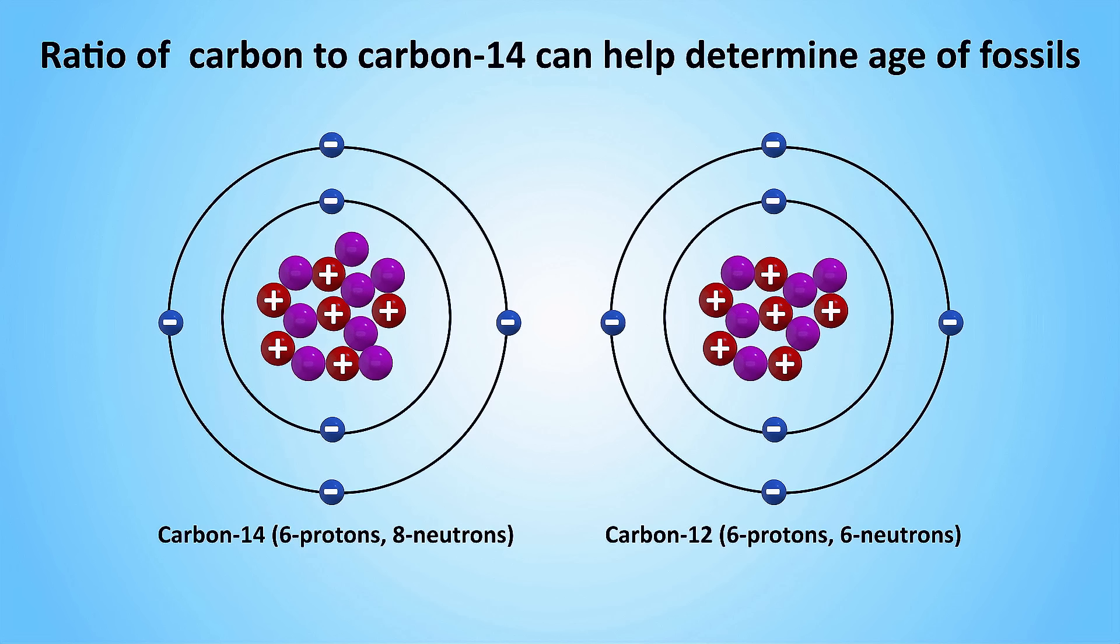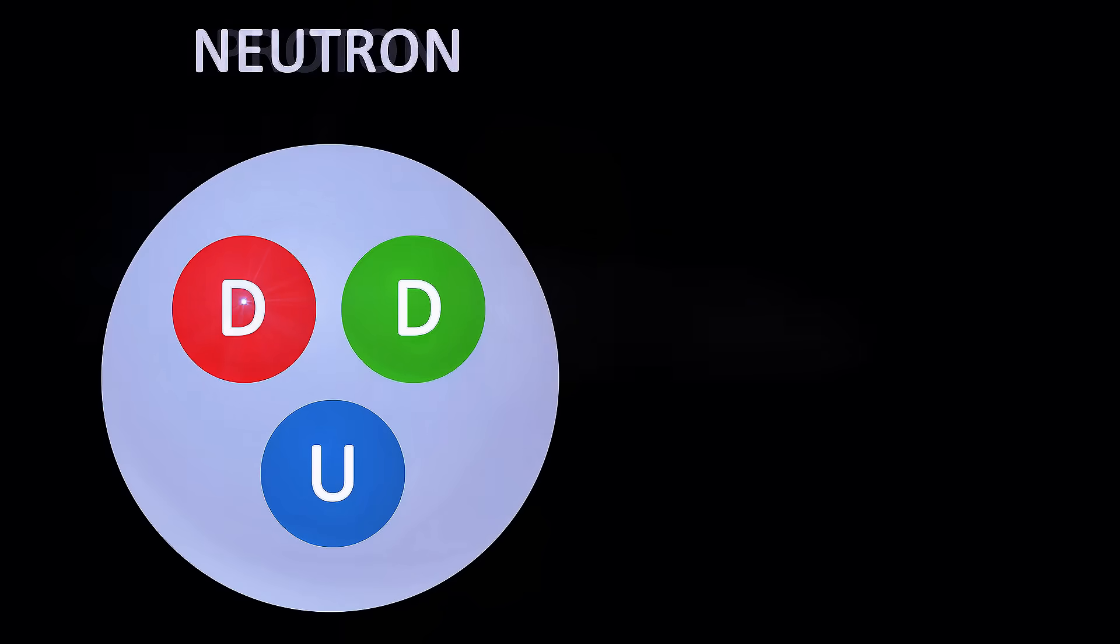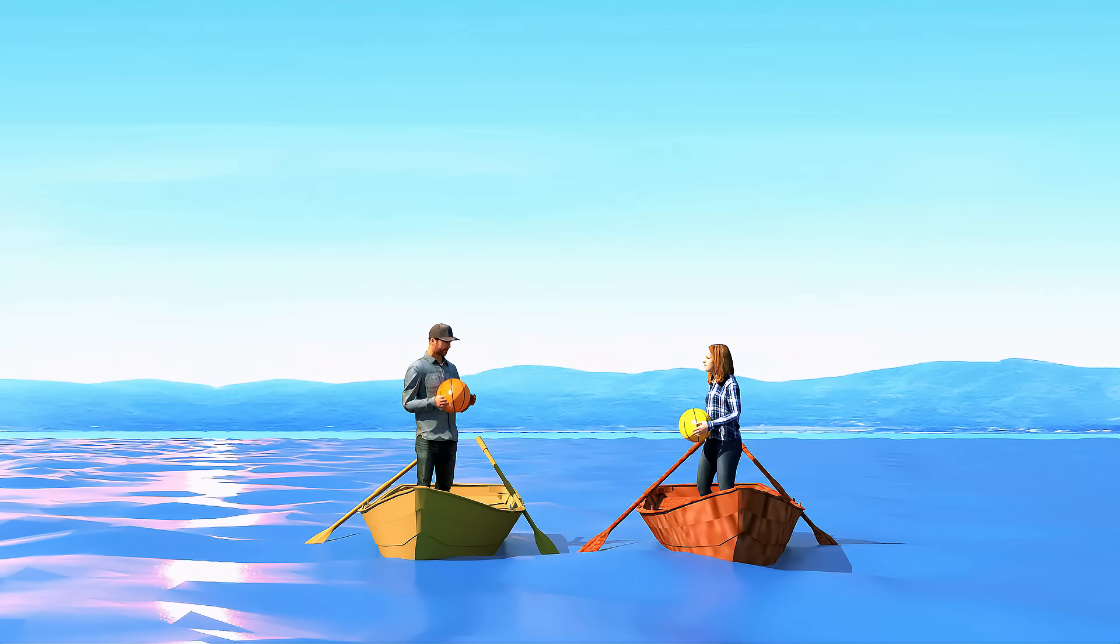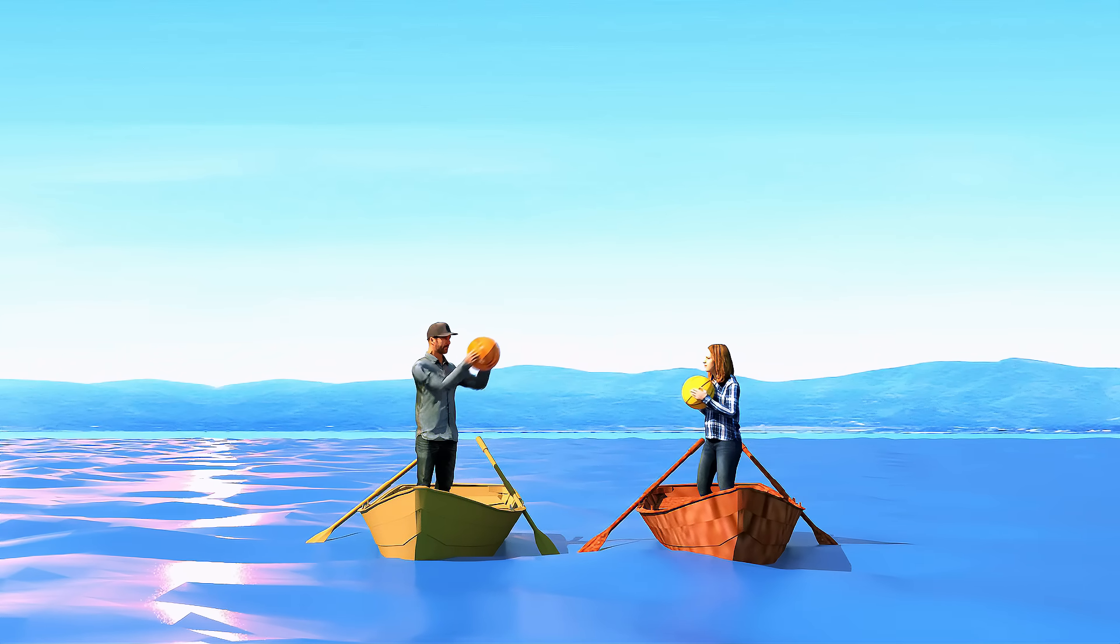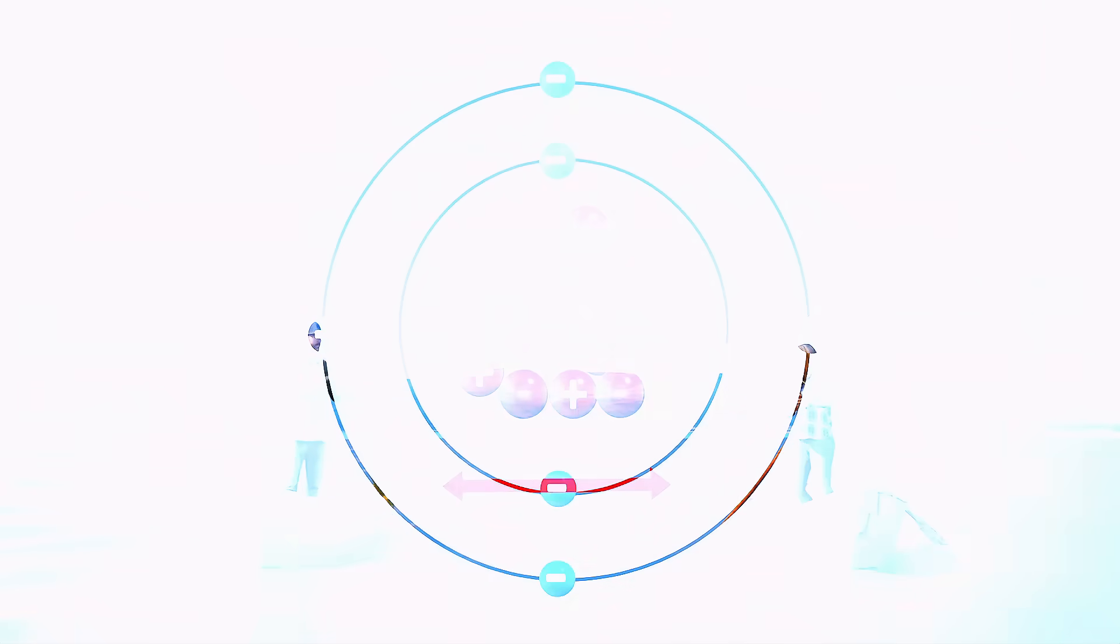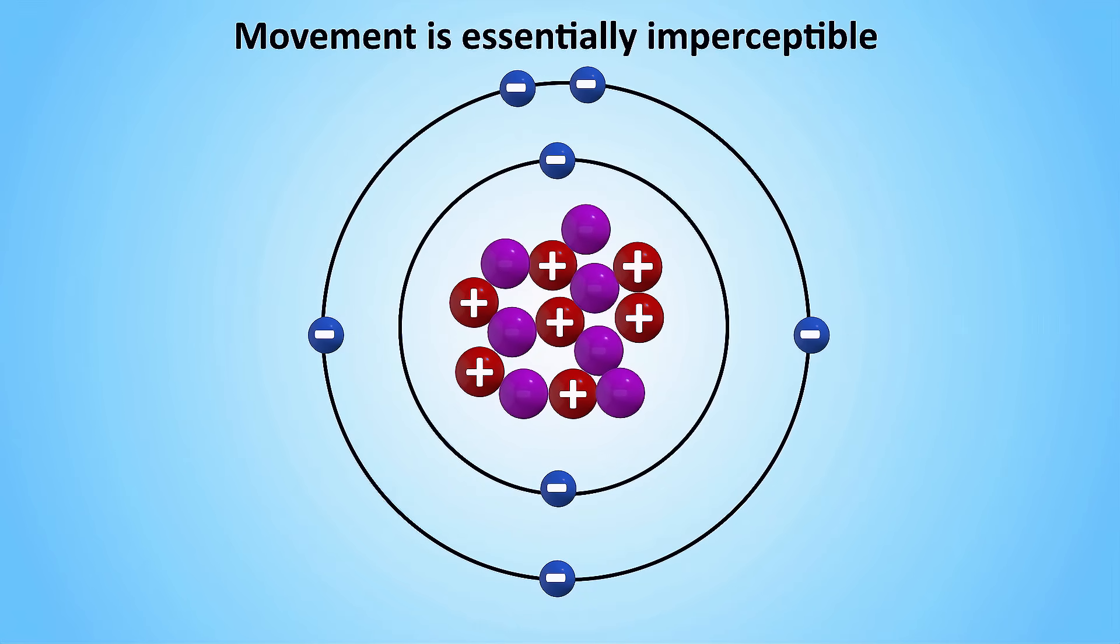You might ask, should an interaction that changes the identity of elements really be called a force? After all, the intuitive definition of a force is something that attracts, repels, or causes objects to move. Well, the weak force actually does that too. Due to the conservation of momentum, a particle emitting a W or Z boson will recoil in the opposite direction, and a particle absorbing such a boson will gain momentum along its propagation direction. Think about it as throwing a heavy ball from one stationary boat towards another. The boats start moving away from each other, appearing to have felt a repulsive force. Now of course, in the case of the weak force, any resulting movement happens at such small scales that it's essentially imperceptible.